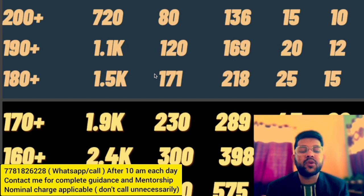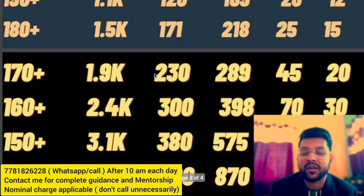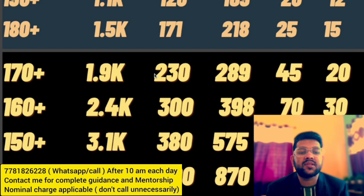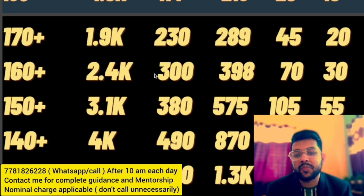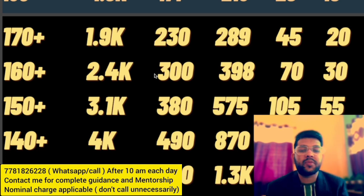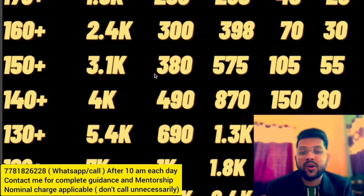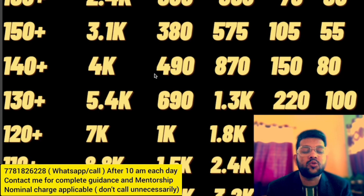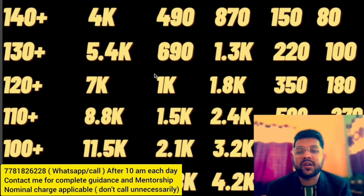For 170 plus: CRL 1,900, EWS 230, OBC 289, SC 45, ST 20. For 160 plus: General 2,400, EWS 300, OBC 398, SC 70, ST 34. For 150 plus: General 3,100, EWS 380, OBC 575, SC 105, ST 55 respectively for all categories. For 140 plus: General 4,490, EWS 870, OBC 150, SC 80. For 130 plus: CRL 5,400, EWS 690, OBC 1,300, SC 220, ST 300.